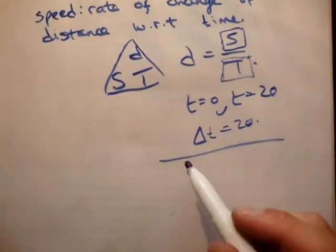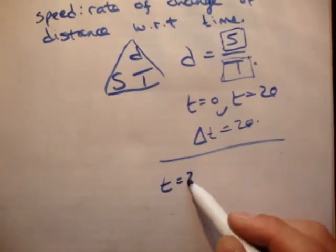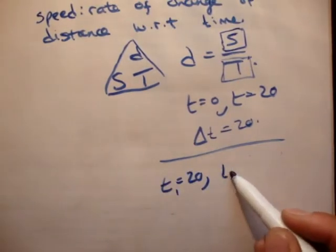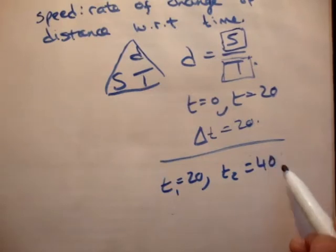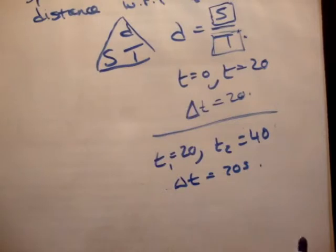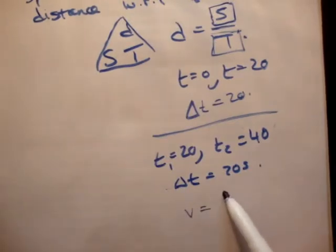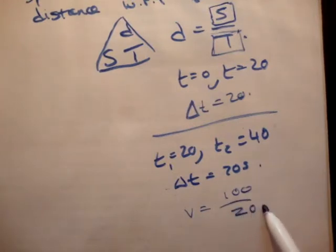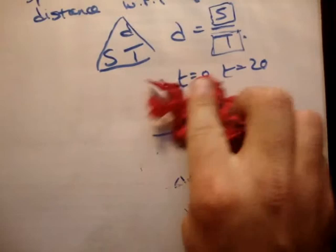Or if at the beginning T was equal to 20 seconds, and T2 equals 40 seconds, well then you would say that delta T equals 20 seconds. And then you would say V equals whatever distance, like 100 over 20 seconds.